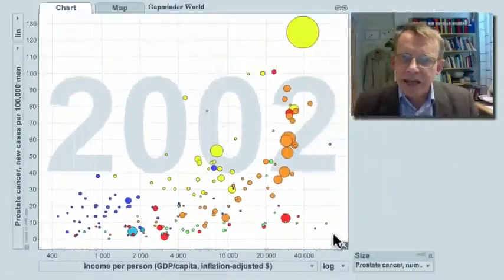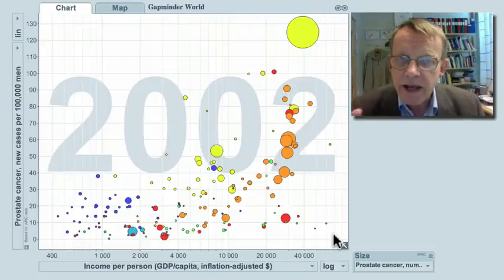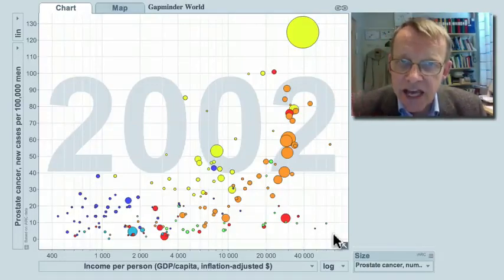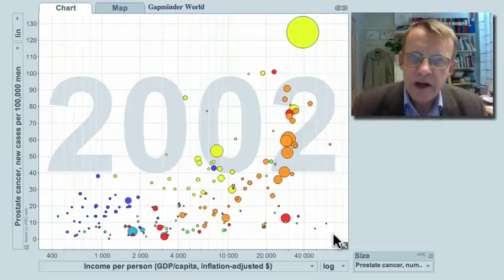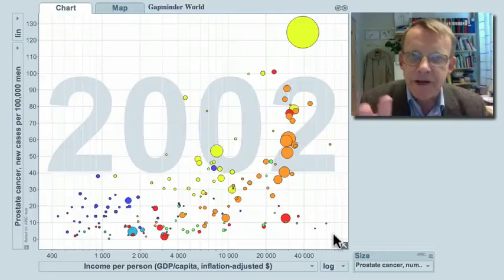There's no direct relation between risk for prostate cancer and income. And beware, here there's been a standardization for age composition, so the rates of different countries are compared as if the age composition were the same in all countries.